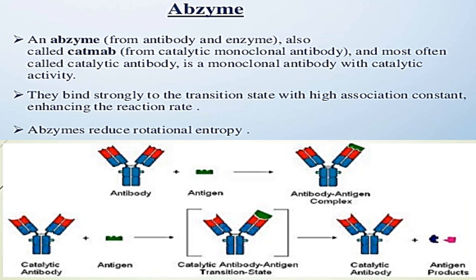The meaning of 'abzyme': 'ab' means antibody, whereas 'zyme' means enzyme. It is also called 'catmab,' meaning catalytic monoclonal antibody, and most often called a catalytic antibody. It is a monoclonal antibody with catalytic activity. They bind strongly to the transition state with a high association constant, enhancing the reaction rate.